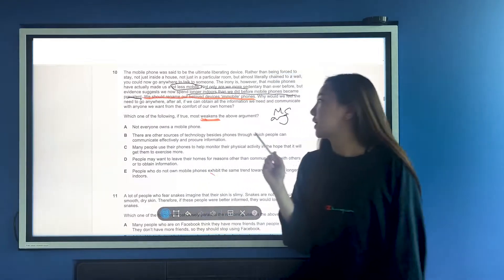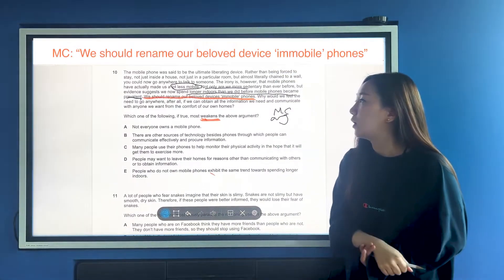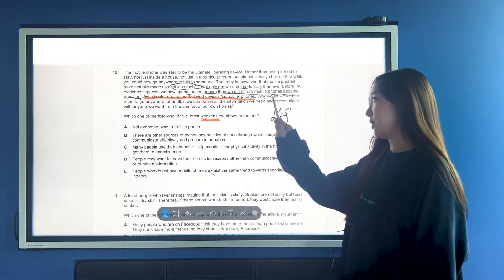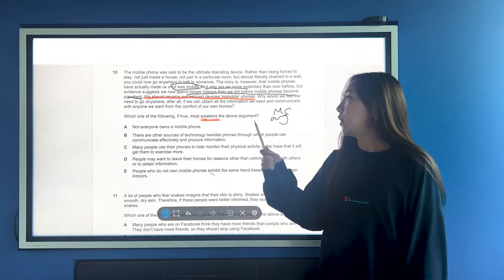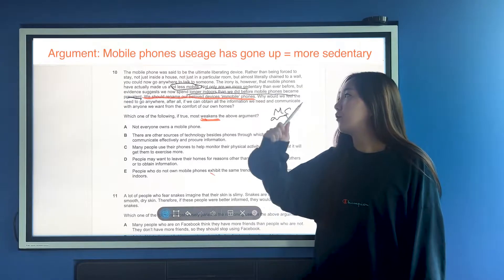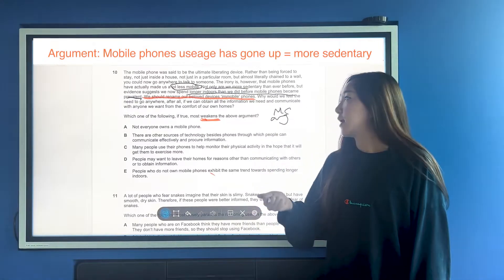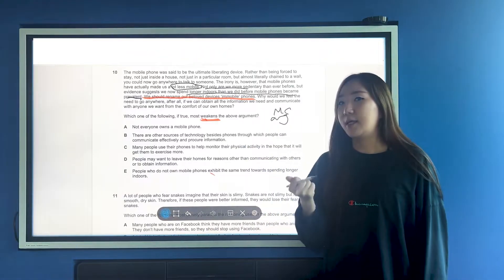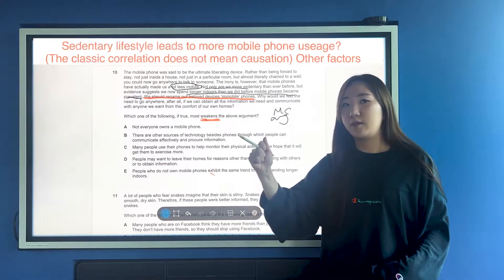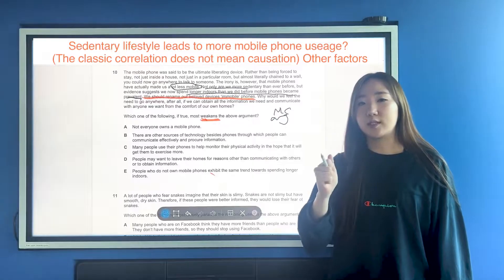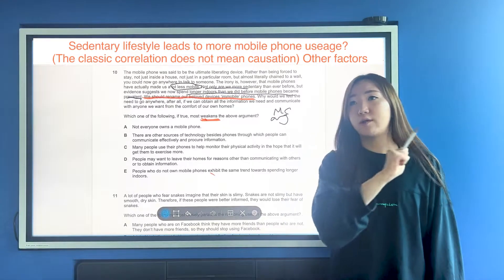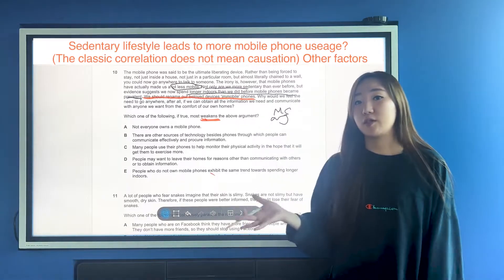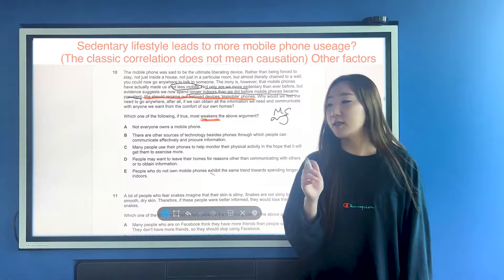Not only are we more sedentary than ever before, but evidence suggests we now spend longer indoors than we did before mobile phones became prevalent. We should rename our beloved devices immobile phones. This is really the conclusion. You can see the flaw here quite clearly, I hope. We're saying that there is a trend in mobile phone users going up. At the same time, we're becoming more sedentary. So, the weakness here will either be that the sedentary perhaps comes first and it causes the mobile phone use to go up, or there is a third factor.